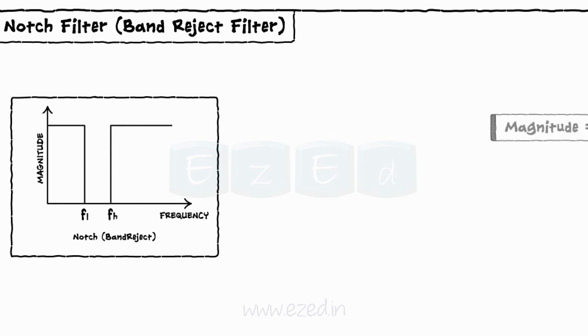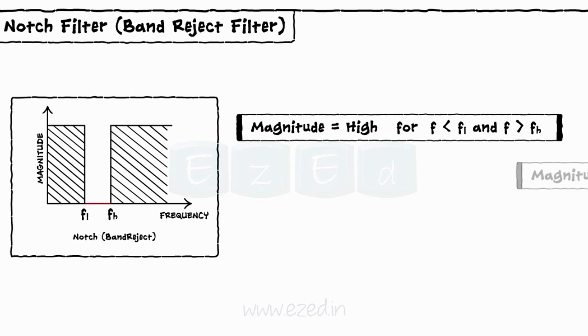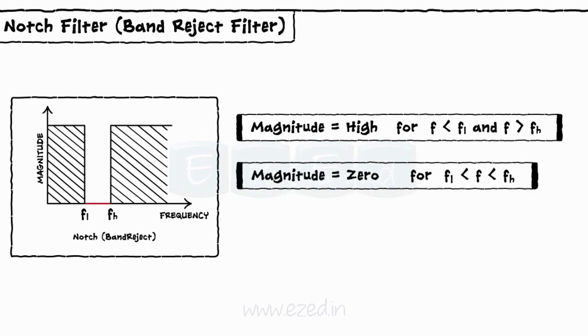But notch filter allows all frequencies below lower cutoff and above higher cutoff and blocks intermediate frequencies. This shows that a band pass filter and a band reject filter are opposite to each other.